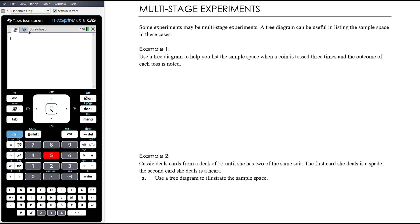Example one: use a tree diagram to help you list the sample space when a coin is tossed three times and the outcome of each toss is noted. This is simply about organizing and thinking about sample space. The first toss could be a head or a tail, and the next toss could also be a head or a tail.